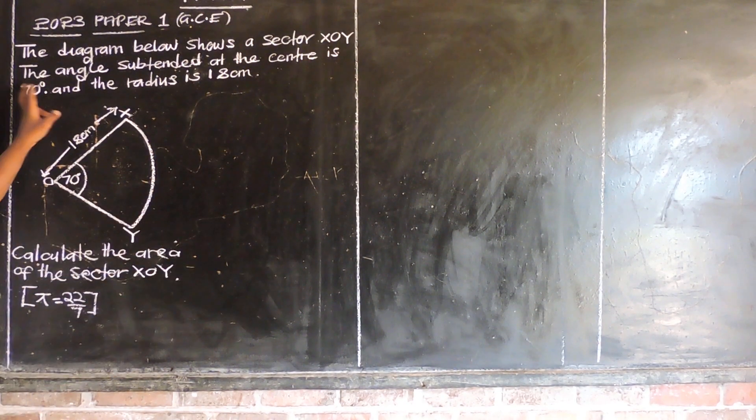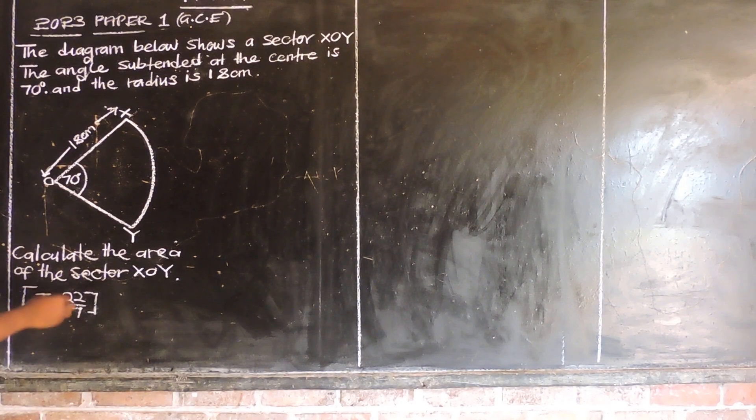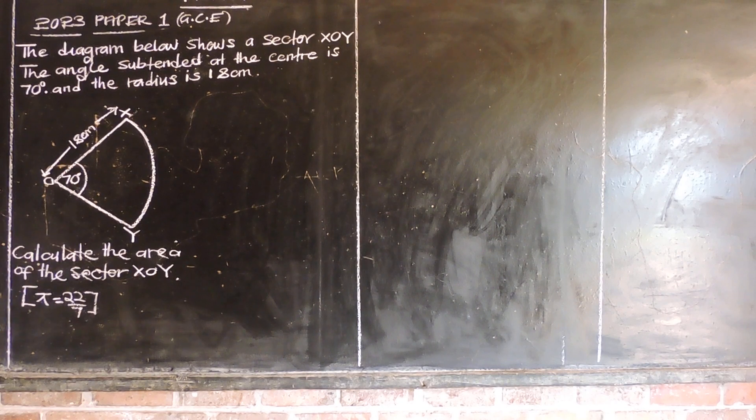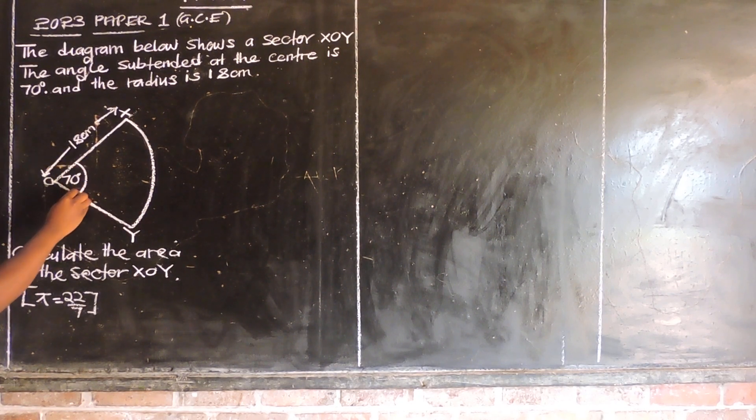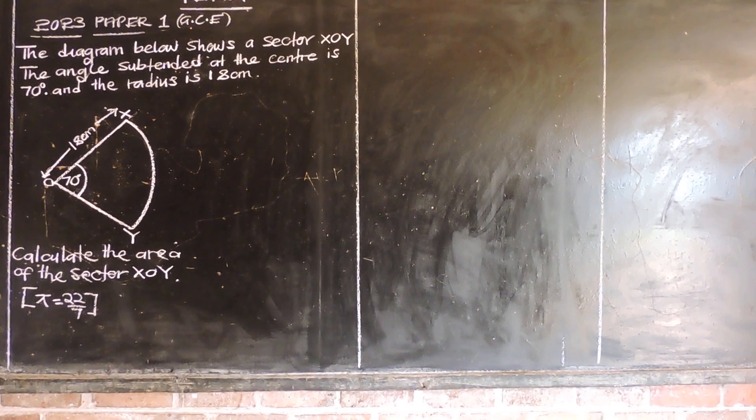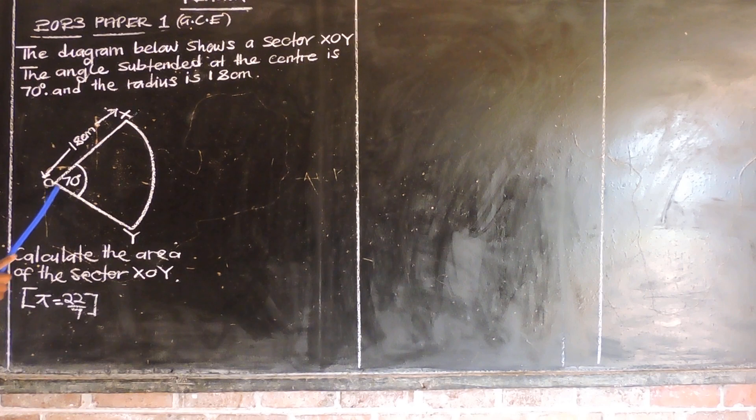Now, the angle subtended at the center of this sector is 70 degrees. So this diagram shows a sector which is X, O, Y. The angle which is subtended at the center is 70 degrees. And the radius of this sector has been given to be 18 centimeters. That is, O, X and O, Y.